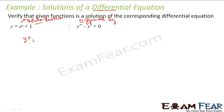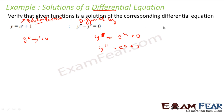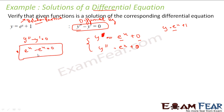The differential equation is y'' − y' = 0, and we verify whether y = e^x + 1 is a solution. Finding y': differentiating e^x + 1 gives e^x (the constant 1 becomes 0), so y' = e^x. Differentiating again gives y'' = e^x. Substituting into the equation: y'' − y' = e^x − e^x = 0. This confirms that y = e^x + 1 is indeed a solution for this differential equation.